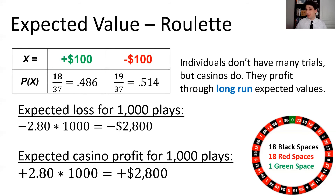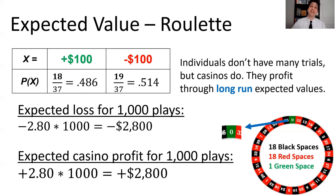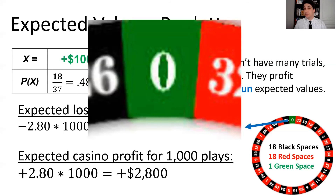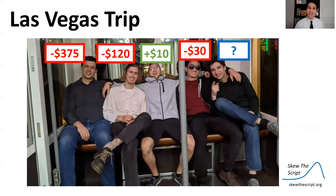Individuals don't have many trials — you may play three or four times, so you might come out ahead. But on average over many plays you lose. The casino knows about expected value and makes money based on these long-run expected values because they are in the long run, with many plays per day. They profit from those negative expected values for you, and it's all because of that pesky green space, which always adds probability to the negative side when betting on black or red.